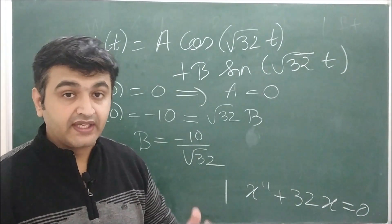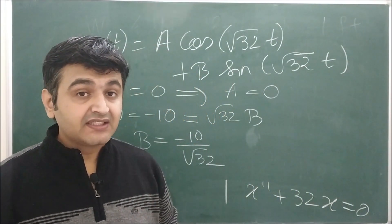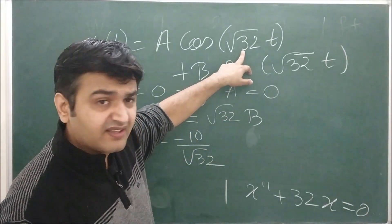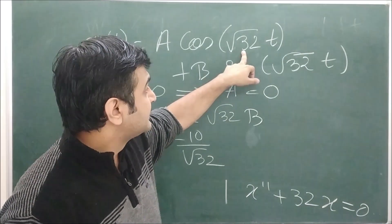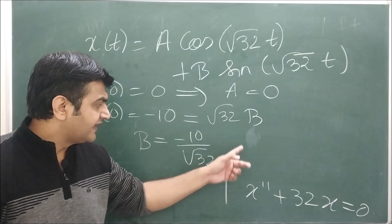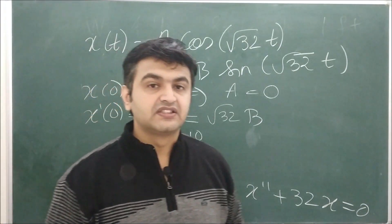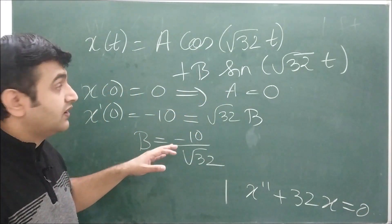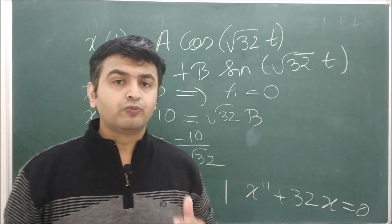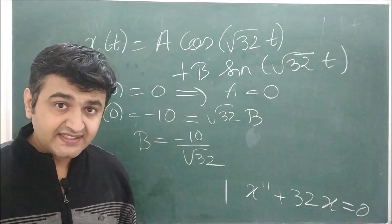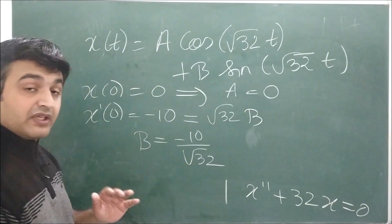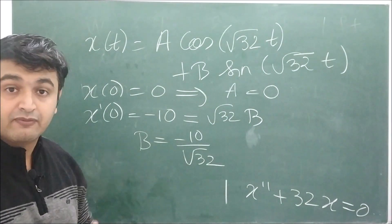So the equation of motion is x(t) = (−10/√32)·sin(√32·t). This can be simplified since √32 = 4√2, so B = −10/(4√2) = −5/(2√2). The period is T = 2π/ω = 2π/√32 = 2π/(4√2). The frequency is f = 1/T = √32/(2π). Once you have ω you can state both the period and frequency of the motion.